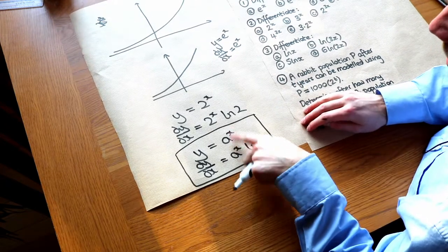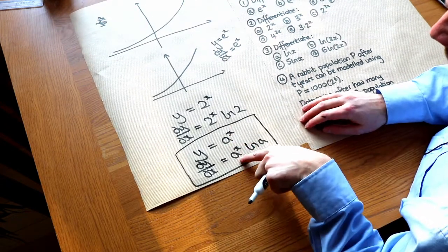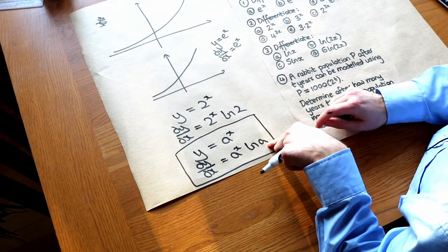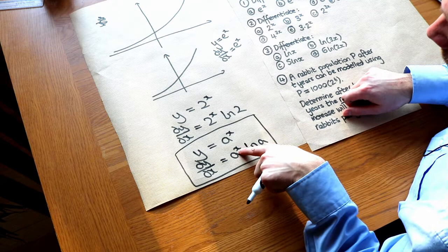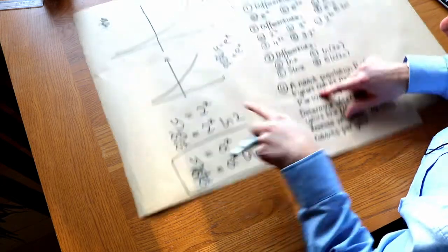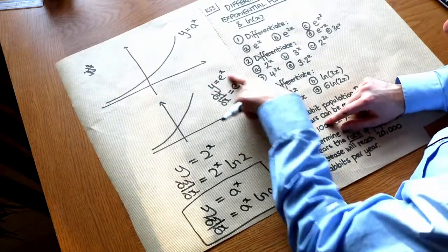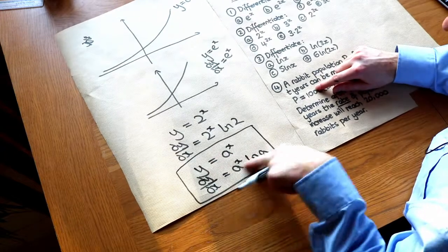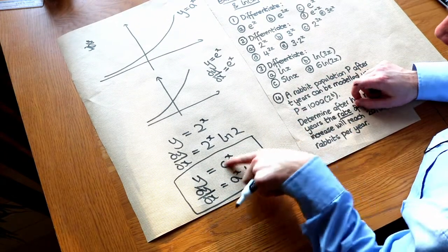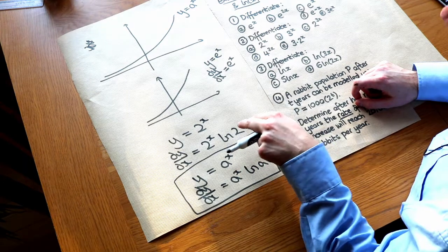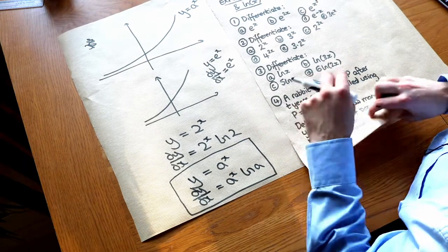And note by the way that if a was e so we had e to the x, we get e to the x ln e. But if you're familiar with your laws of logs then you'll know that ln of e is just one. So e to the x ln e is just the same as e to the x. So this is just a special case of that. And this is the one result you need to remember for the moment. And by the way if you want to prove for this particular result I don't cover it in this video but I do cover it in my slides on my website.